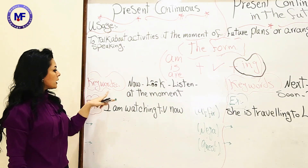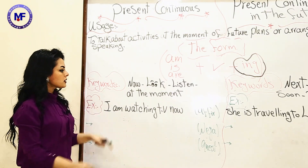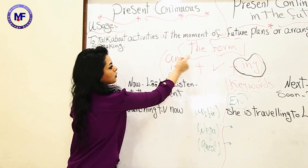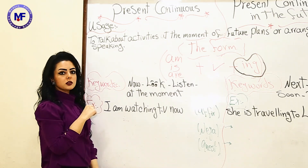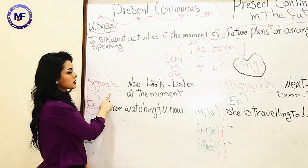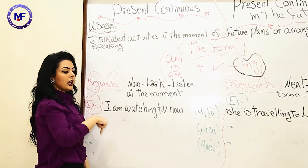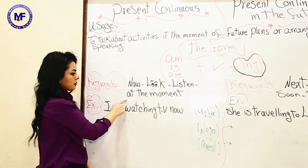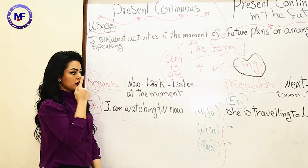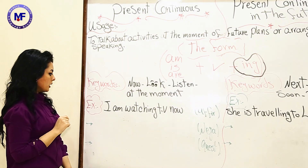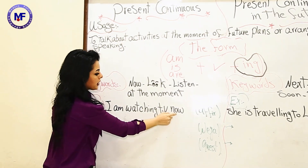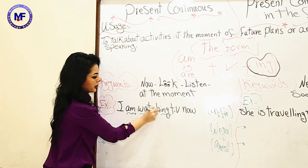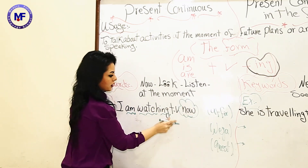Number three — the keywords. The keywords are the words that, when you see them in your sentence, you know what form you must write. Keywords for the present continuous are: now, look, listen, at the moment — 'at the moment' equals 'now' — and look and listen. Let's have an example: 'I'm watching TV now.' Look here — am, watch, -ing, and we have 'now' as the keyword.